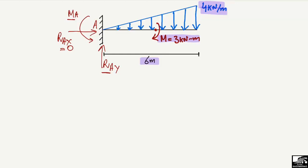To find RAY, we first have to find out the total load acting on the beam. This is a uniformly varying load starting with zero magnitude at the start of the beam and up to 4 kilonewtons per meter at the end of the beam.